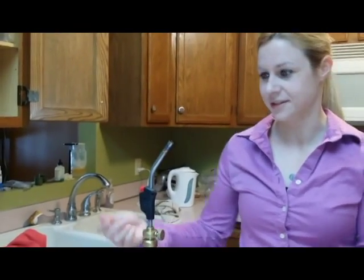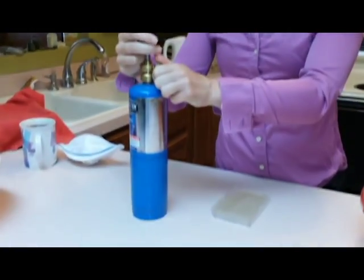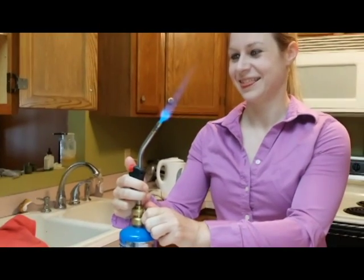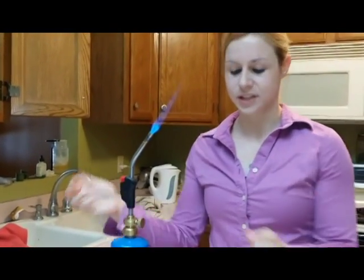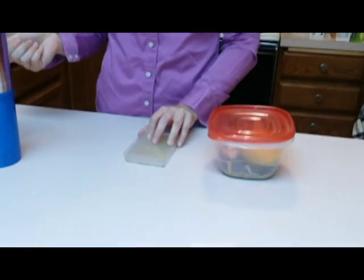You'll need your Bunsen burner, also known as propane torch. You'll need a sterile agar plate. This particular one is potato dextrose agar. And you'll need your culture that you're going to be subculturing.